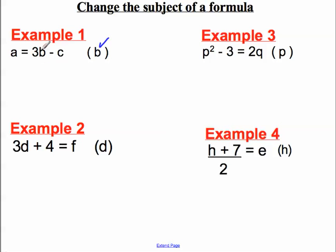I want to get B all by itself on its own. So, imagine I added C to both sides to undo this negative C. On the left-hand side, I would get A plus C, and on the right-hand side, I would simply be left with 3B. Now, I've got 3B. I don't want 3Bs. I want 1B. So, I divide both sides by 3, and I would get A plus C all divided by 3 is equal to B. And I've made B the subject of this formula.